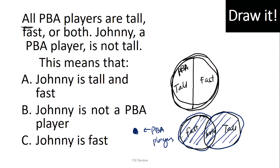The statement says: Johnny is a PBA player and is not tall. Since he's not tall, he's not in the tall region or the both region. But he is definitely a PBA player. So he must be in the fast-only region. If he's a PBA player and not tall, then he must be fast. So what can we say about Johnny? Johnny is fast — because as a PBA player, he has to be either tall, fast, or both, and since he's not tall, he must be fast.